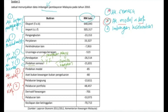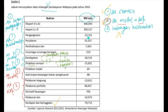Jadi setakat ini anda sudah tahu apa itu akaun semasa dan apa itu akaun modal dan kewangan. Sekarang, kalau saya nak dapatkan akaun imbangan keseluruhan ini, saya akan guna akaun semasa tambah akaun modal dan kewangan tambah lagi satu iaitu kesilapan dan ketinggalan — barulah kita dapat imbangan keseluruhan. Imbangan keseluruhan ini sebenarnya sama dengan imbangan pembayaran.